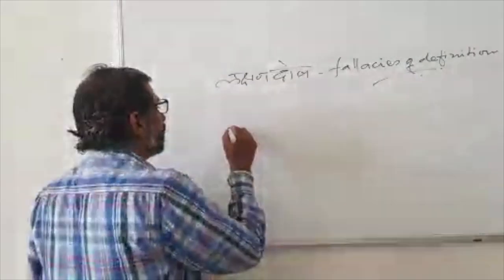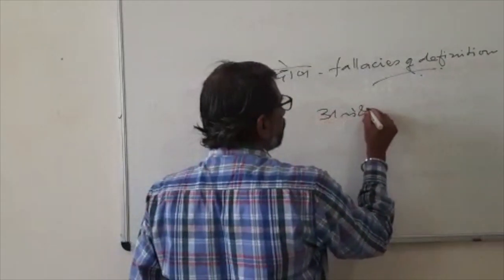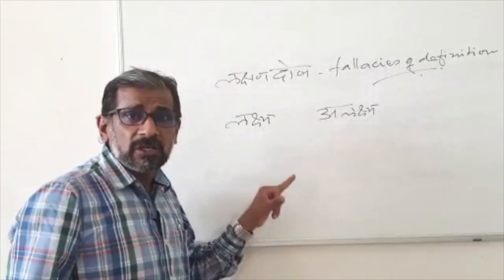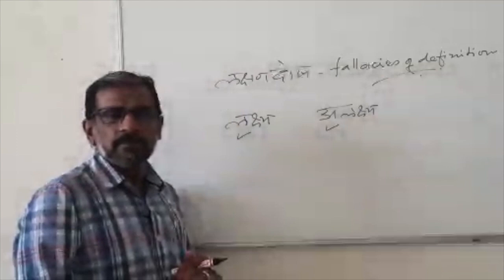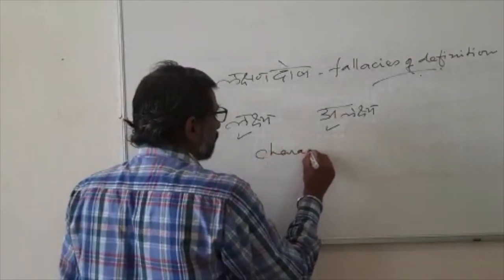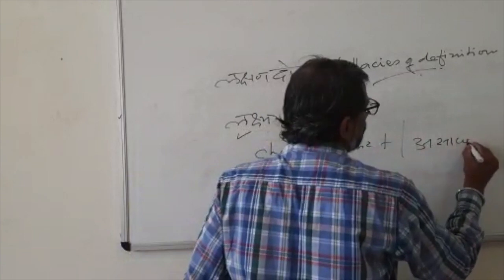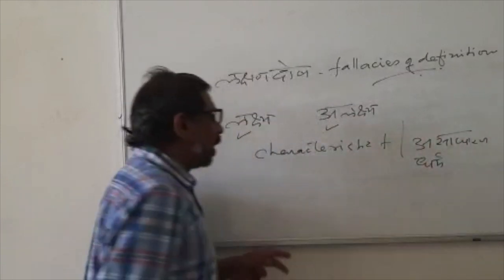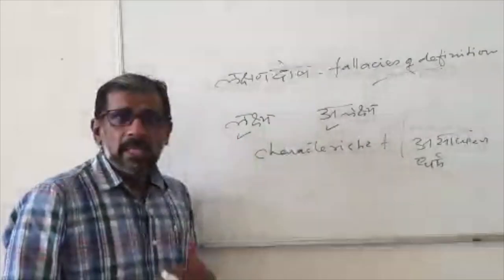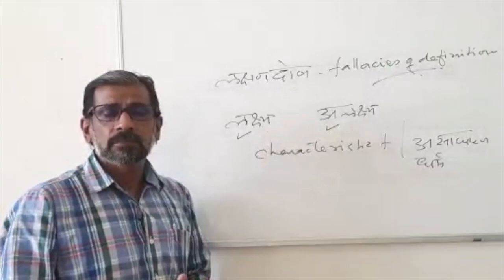The entity that is to be defined is called Lakshya. All entities other than Lakshya are called Alakshya. The function of a definition, or the function of Lakshana, is to differentiate Lakshya and Alakshya. A definition is a statement that states the characteristic feature, or Asadharana Dharma, and this characteristic feature helps us to differentiate Lakshya and Alakshya.